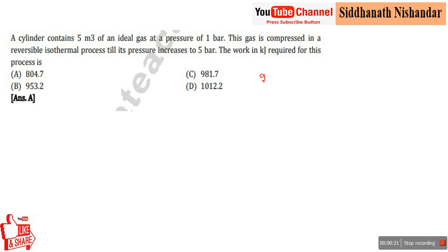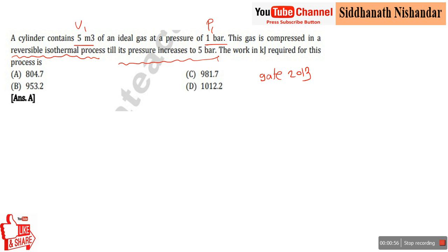This numerical is asked in GATE 2013. A cylinder contains five cubic meters of an ideal gas at a pressure of one bar. This gas is compressed in a reversible isothermal process till its pressure increases to five bar. The initial volume is five cubic meters, pressure p1 is one bar, and p2 is five bar. They ask for the isothermal work in kilojoules.